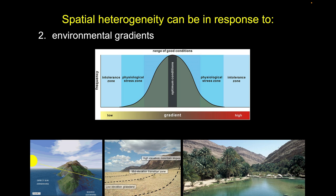We can see the effect of strongly deviating from these gradients — something like an oasis, where we're surrounded by arid landscapes but water availability is such that it's readily available, and vegetation strongly responds to that. Environmental gradients can set up heterogeneity in space.